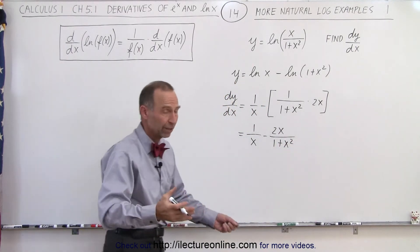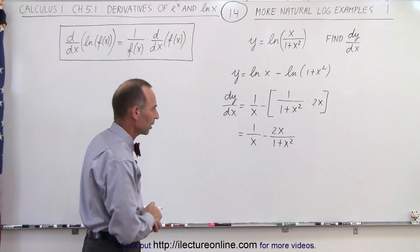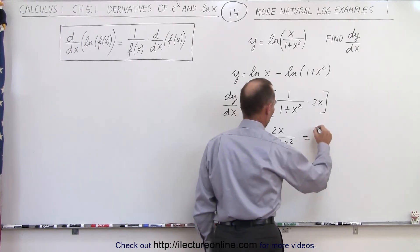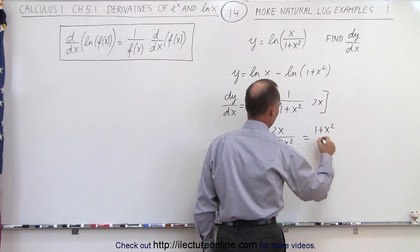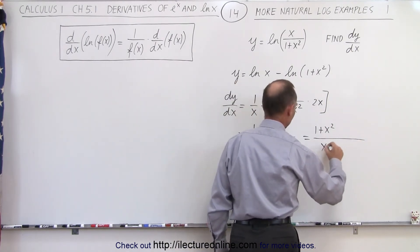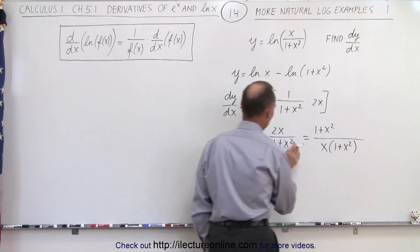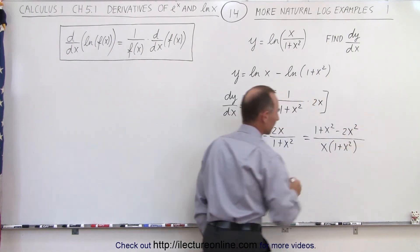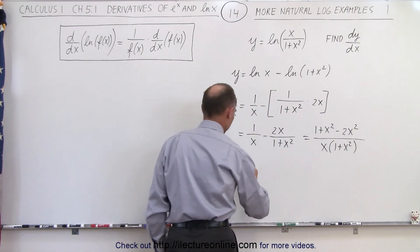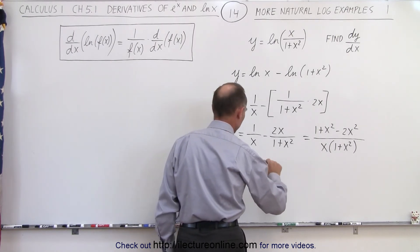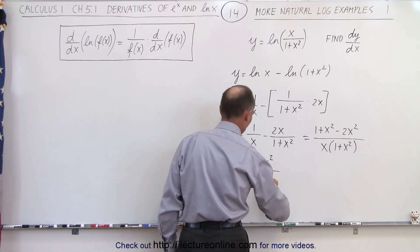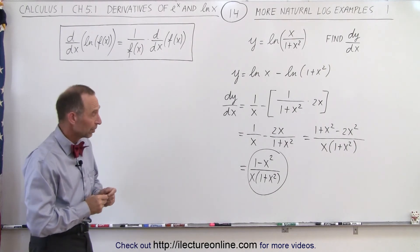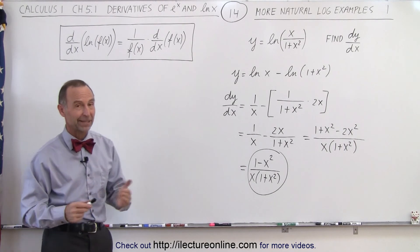Now we could leave it like that, or we can write it over a common denominator, which would be the common thing to do. The common denominator would be x times 1 plus x squared. That means the numerator needs to be multiplied times x, so that would give minus 2x squared. Simplifying what's in the numerator, we have 1 minus x squared in the numerator divided by x times 1 plus x squared. That's the more compact form to write the answer, which is the derivative of our original function. And that's how it's done.